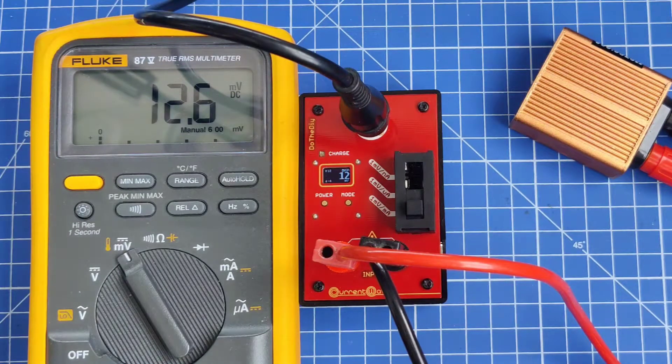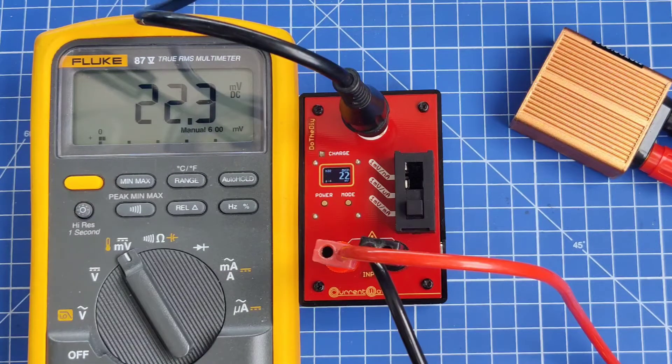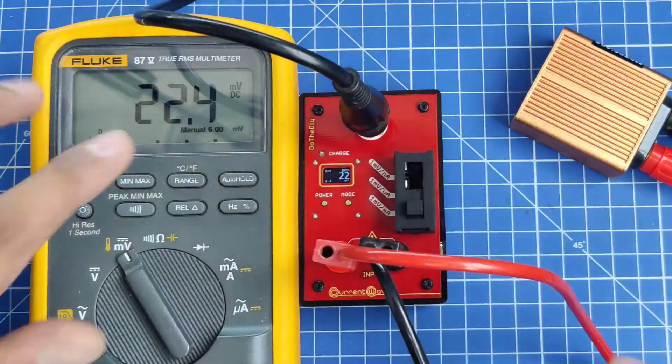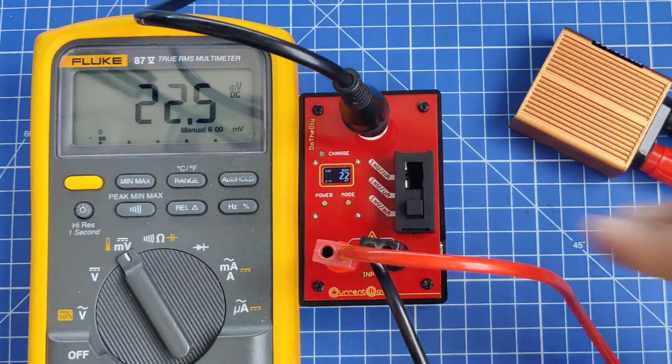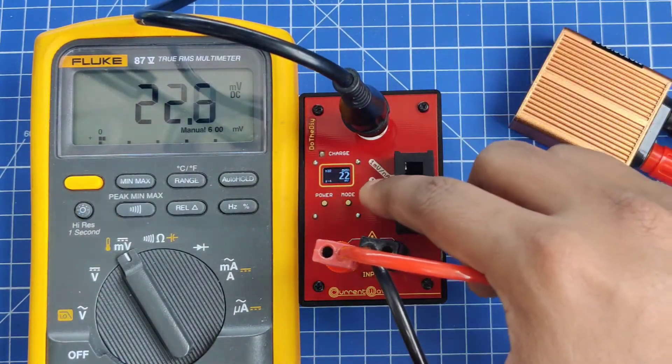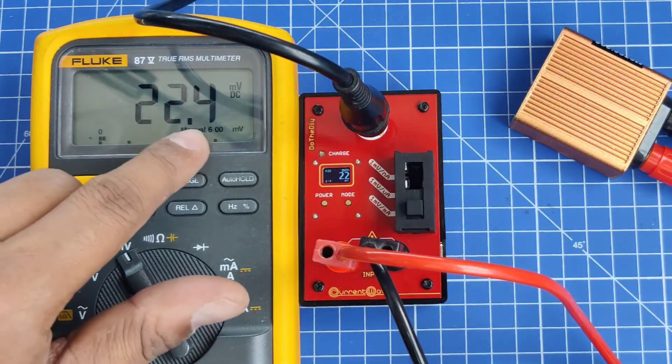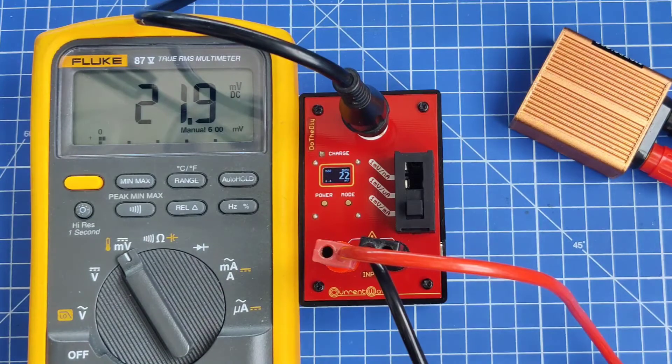If I vary the voltage, you will see that the reading also will change. Currently you can see it's measuring 22mA and the DMM also is showing similar value. In this device I'm not showing the decimal digits, which is why the DMM shows one digit after decimal.